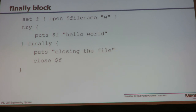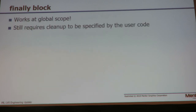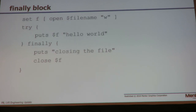The try/finally mechanism also gives you another way to do the cleanup, but that also puts the responsibility on the user. Couldn't think of a way to hide the try and the finally. But that one actually does work in global scope — you can put that code in a Tcl script and it will close the file, printing out the 'closing the file' message even at the global scope.